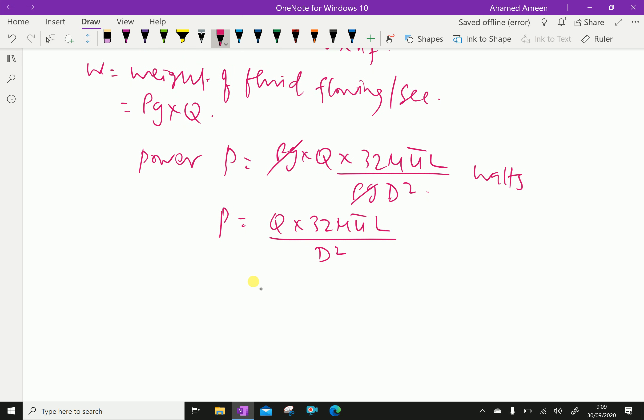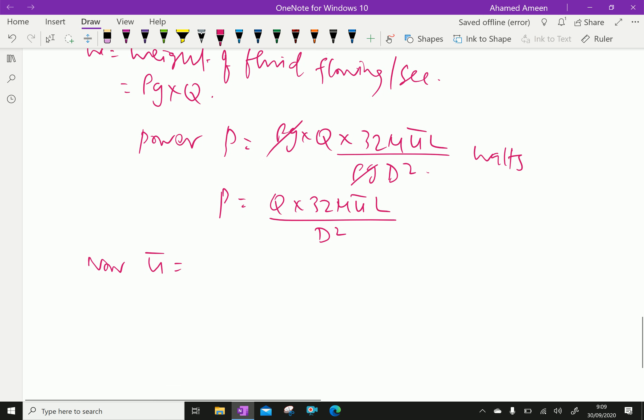Now we will calculate average velocity u bar is Q over area, Q is 0.01 meter cube per second by pi by 4 d square, d is 0.1 square, which gives approximately 1.273 meter per second.